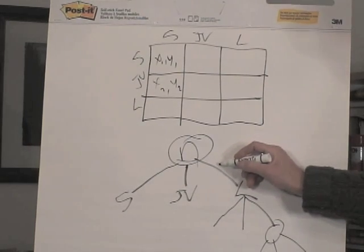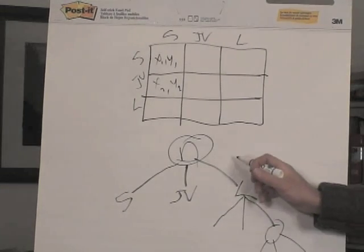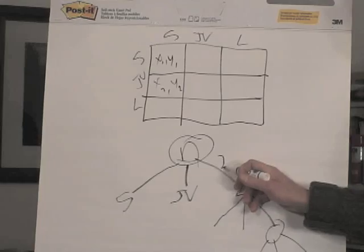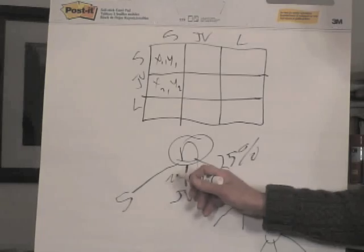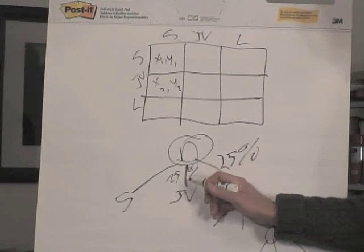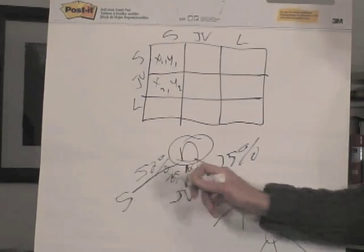Notice that there's a certain probability, a certain likelihood of this happening. This has a 25% probability of happening. This has a 25% probability of happening. This has a 50% probability of happening.